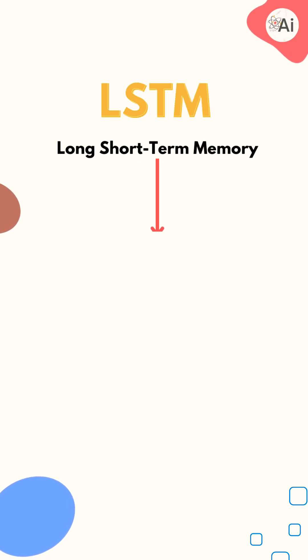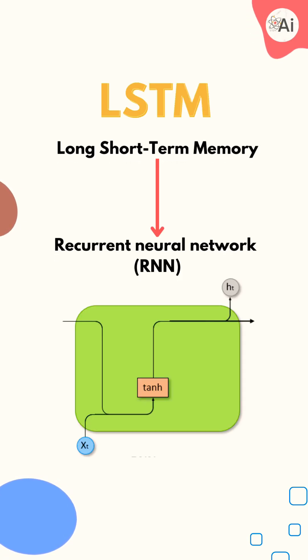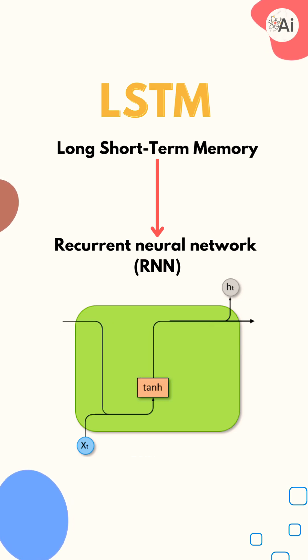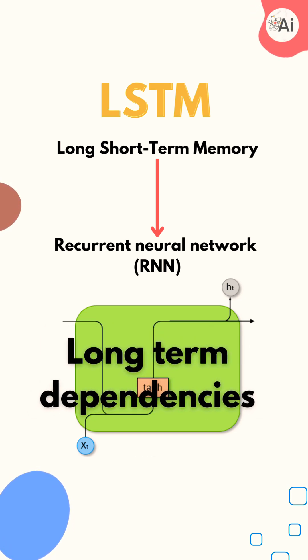Long short-term memory is a type of recurrent neural network architecture that is designed to overcome the vanishing gradient problem and effectively capture long-term dependencies in sequential data.